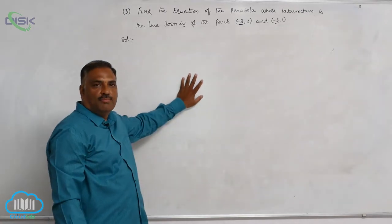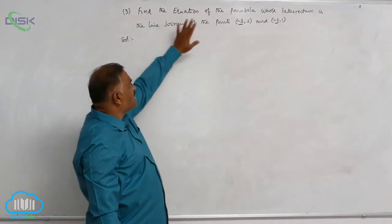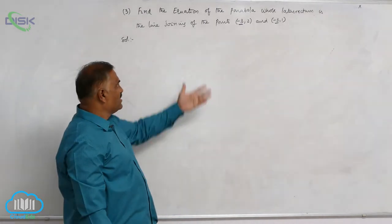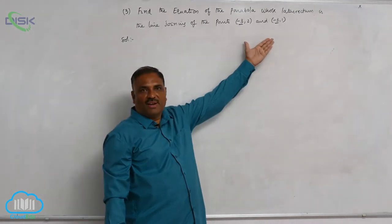Let us discuss a problem from parabola. Find the equation of the parabola whose latus rectum is the line joining the points (-3, 2) and (-3, 1).